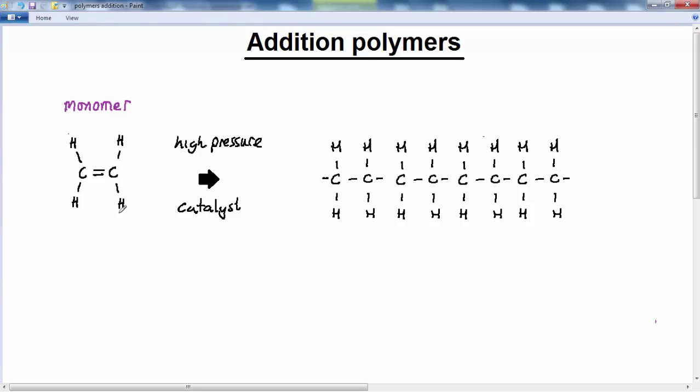Two catalysts that might be used in this process are concentrated sulfuric acid, H2SO4, or peroxide free radicals. We're not going to go into the mechanism, but once again, these are vitally important in opening up this double bond.